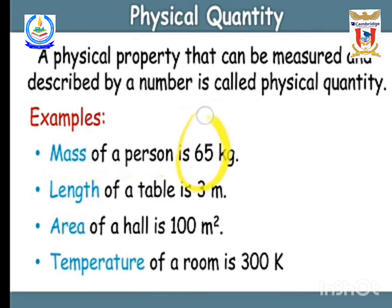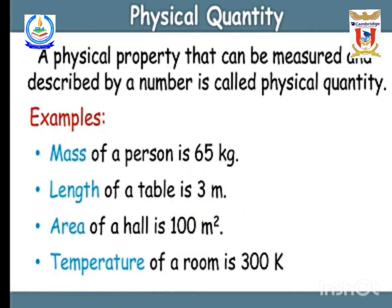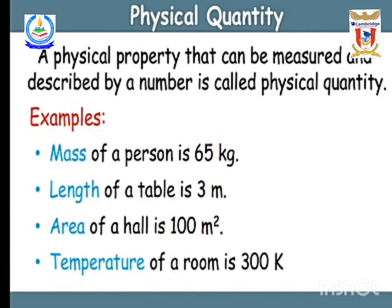For example, the mass of a person is 65 kg — 65 is a number, so mass is a physical quantity that can be measured as a number; kg is a unit of mass. Length of a table is 3 meters — meter is a unit. Area of a hall is 100 square meters. Temperature of a room is 300 Kelvin. These are physical quantities which can be measured and expressed by numbers.